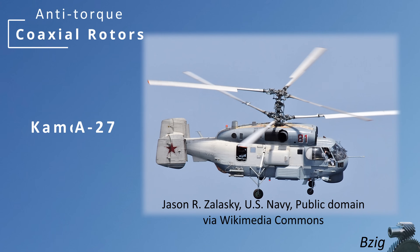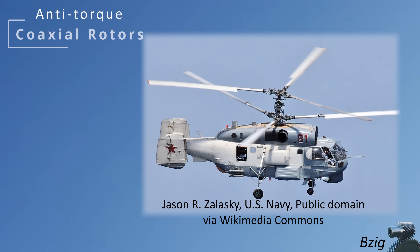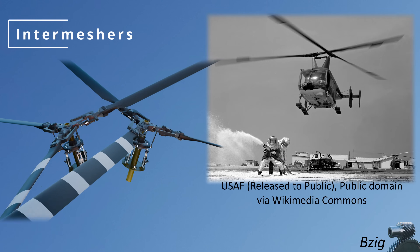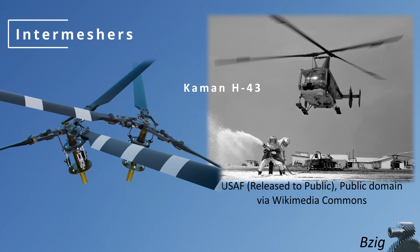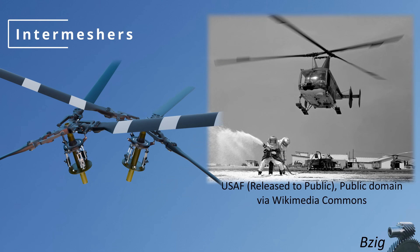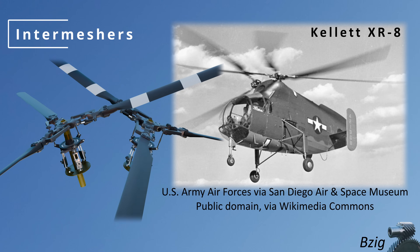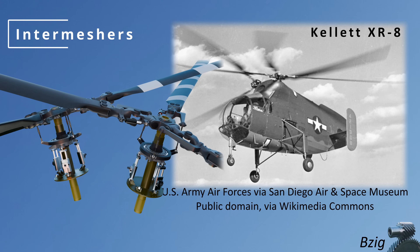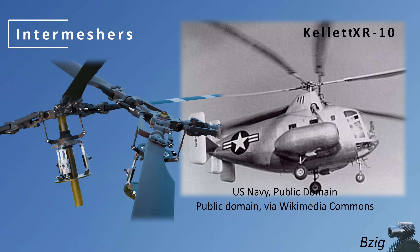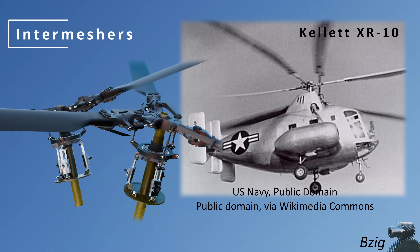Another option is to use coaxial rotors, where each rotor turns about the same center of rotation but in a different direction. An example of this is the Kamov Ka-27. A slight variation is the intermeshing helicopter, where two rotors have different rotation axes angled away from each other in a way that allows intermeshing rotation in opposite directions.